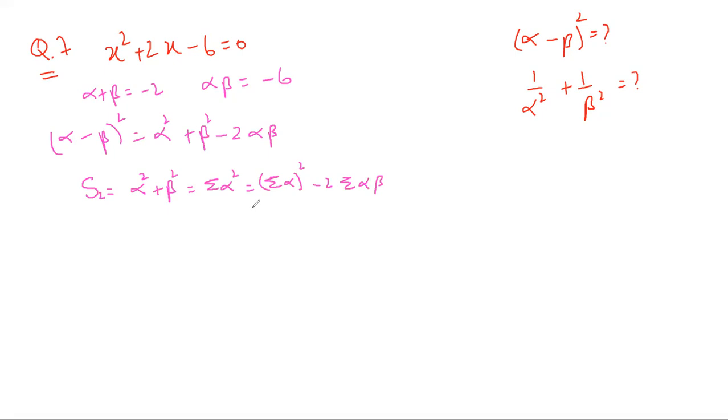Okay, so this is basically going to be sigma alpha is minus two squared, squared is four, and then this is plus twelve. That is going to be sixteen. That is our alpha squared plus beta squared.